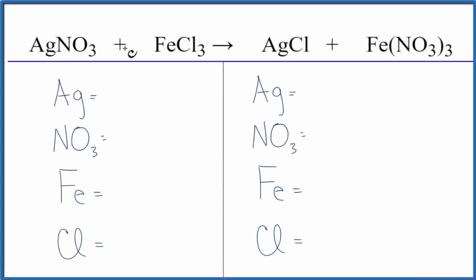In this equation, we have AgNO3, silver nitrate, plus FeCl3, iron(III) chloride.